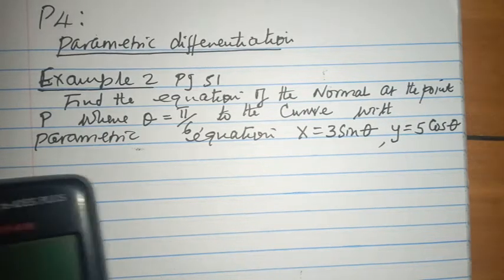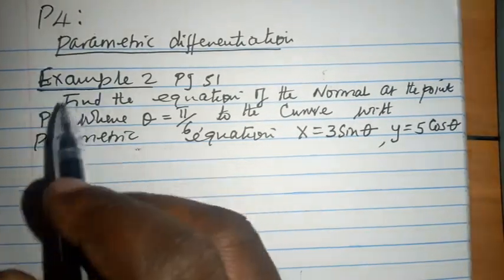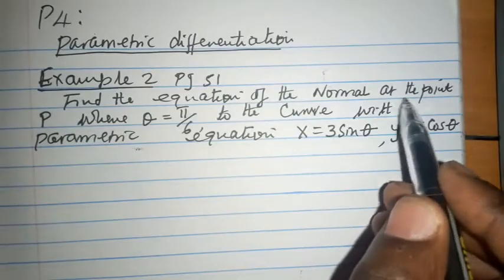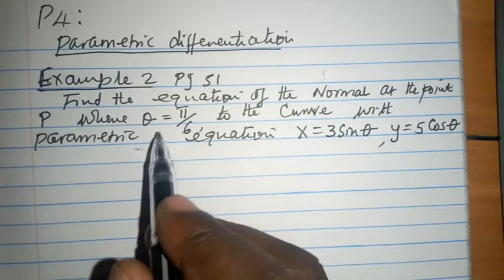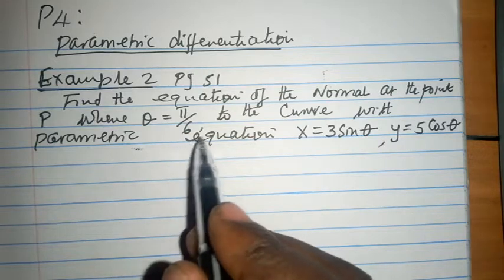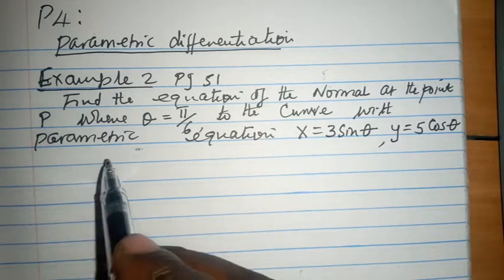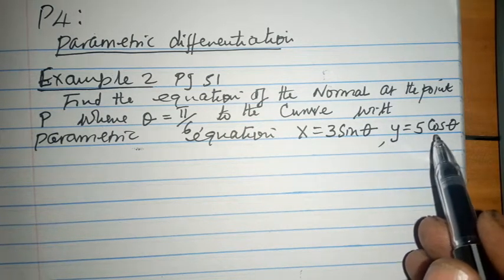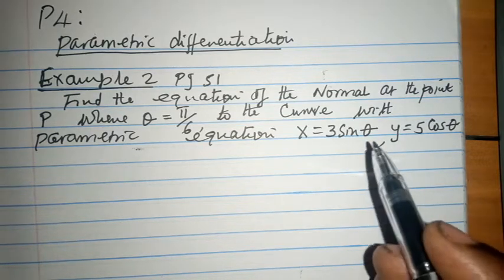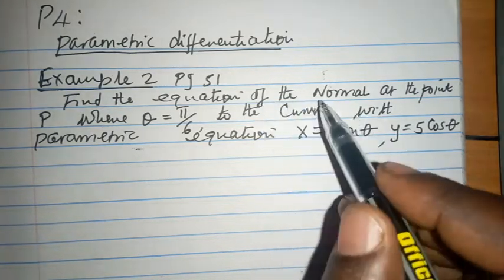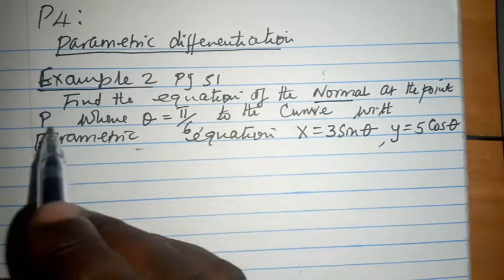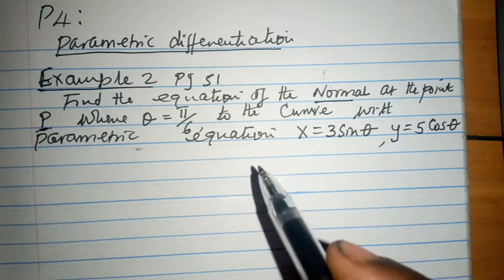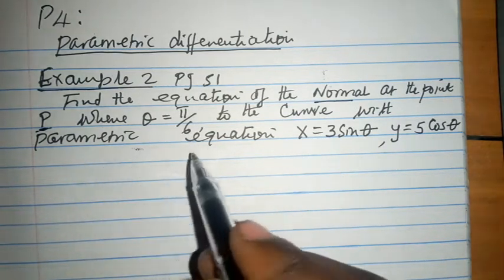I would like to explain this example on page 51: Find the equation of the normal at the point P where theta is pi over 6, to the curve with parametric equations x equals 3 sin theta and y equals 5 cos theta.